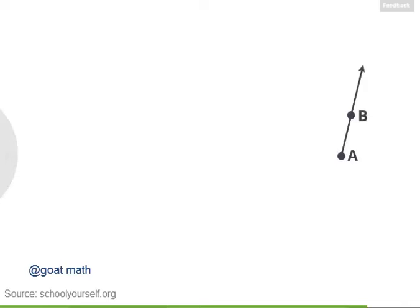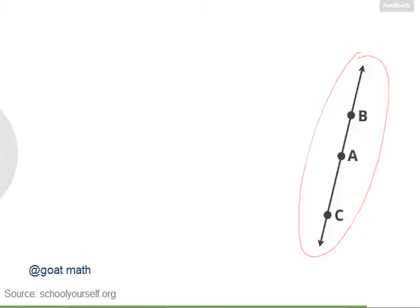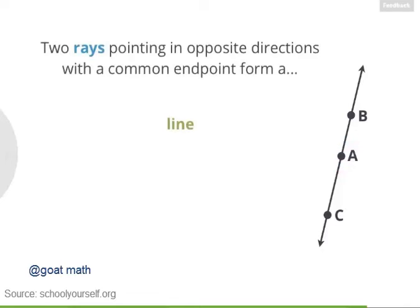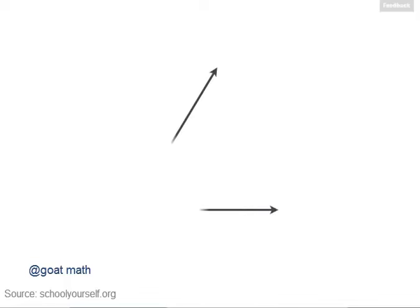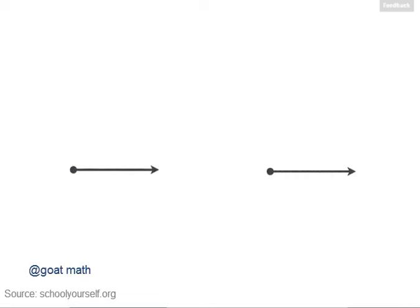Suppose you have ray AB, which goes on forever in one direction, and ray AC, which goes on forever in the opposite direction. These two rays point in opposite directions and share a common endpoint at point A. Together, do they form a line, a line segment, or another ray? Whenever two lines or rays meet, they form an angle. Here's an example of an angle. The measure of an angle is how much you have to rotate one of the lines so it lies on top of the other.